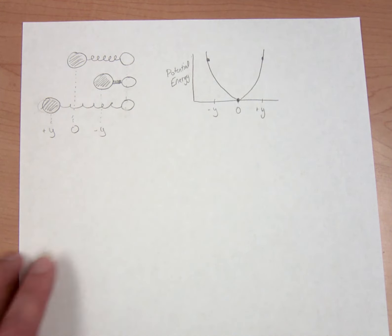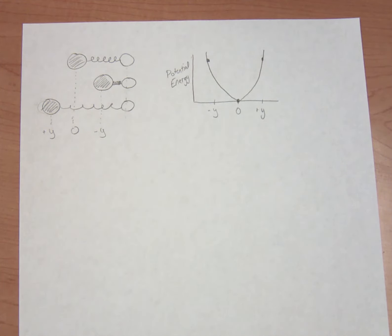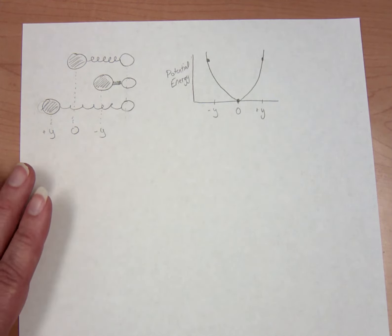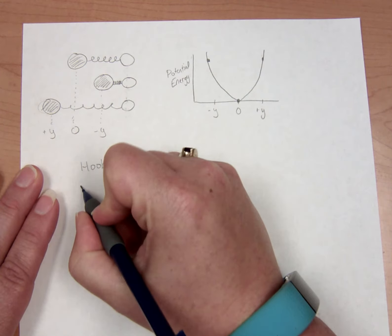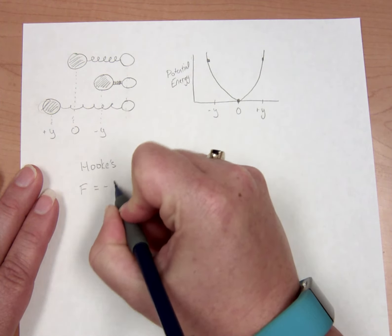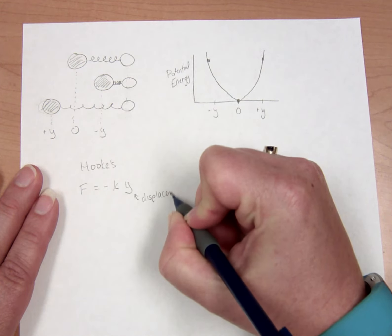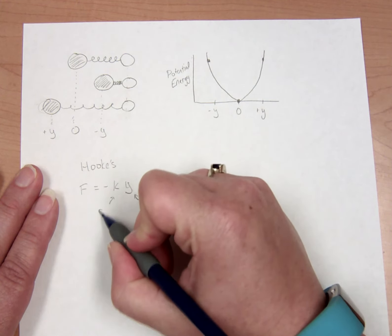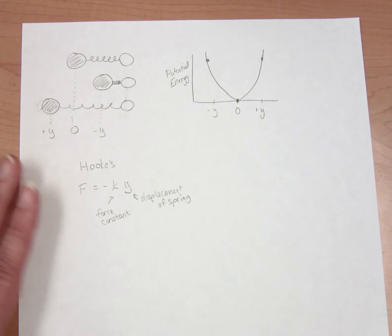It's going to be a little math-intensive — I encourage you to grab a piece of paper and follow along, pausing the video as needed whenever you get a little lost or need more time writing down part of the equation. Let's start with Hooke's Law. Hooke's Law describes the restoring force of a spring: it's equal to negative ky, where y is the displacement of the spring and k is the force constant.